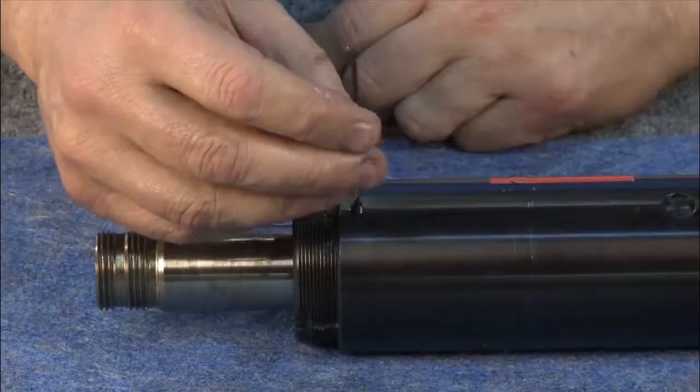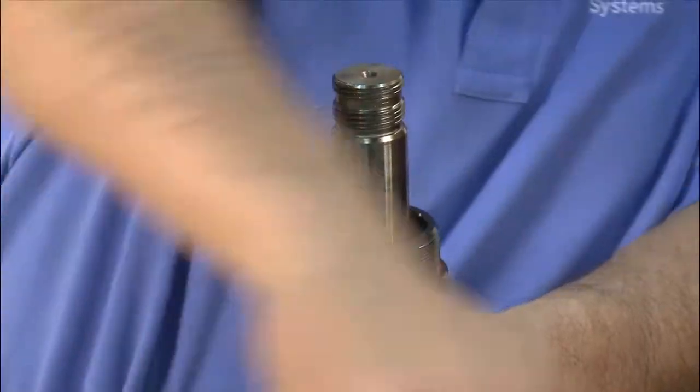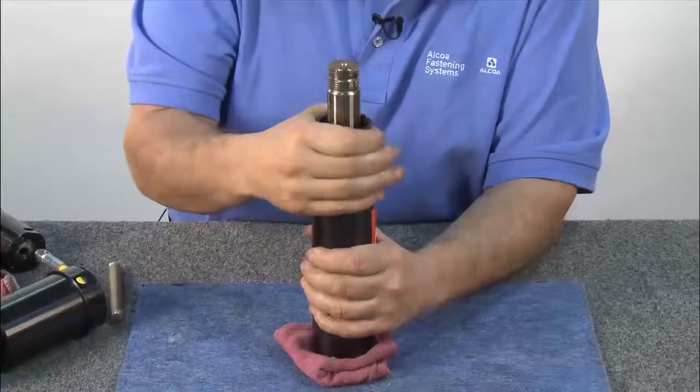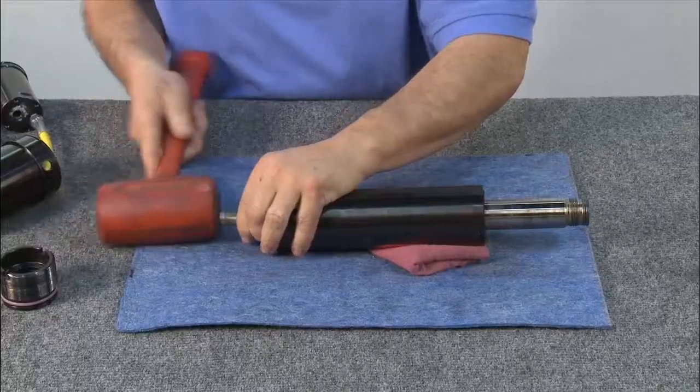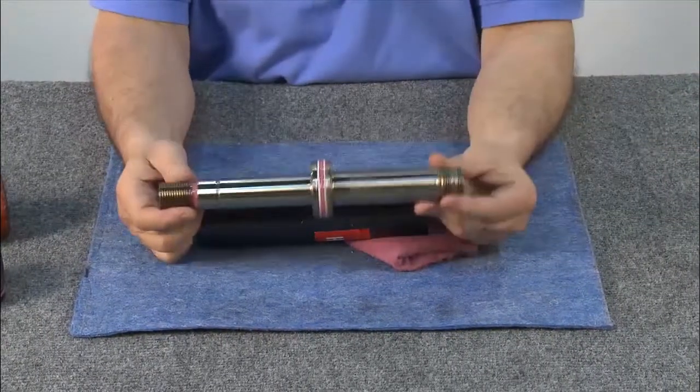Next, using an Allen wrench, remove the front gland locking screw. Remove the front gland. Pull the front piston out of the cylinder.